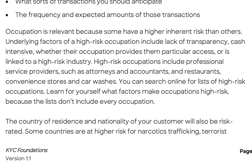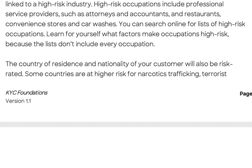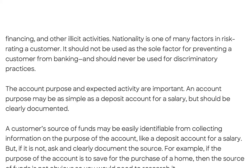Underlying factors of a high-risk occupation include lack of transparency — consultant, import-export are some good examples — and whether the occupation is cash-intensive or provides particular access or is linked to a high-risk industry. High-risk occupations include professional service providers such as attorneys and accountants, and also restaurants, convenience stores, and car washes. You can search online for lists of high-risk occupations. Learn for yourself what factors make an occupation high-risk, because the lists don't include every occupation. The country of residence and nationality of a customer will also be risk-rated, as some countries are a higher risk for narcotics trafficking, terrorism financing, and other illicit activities.